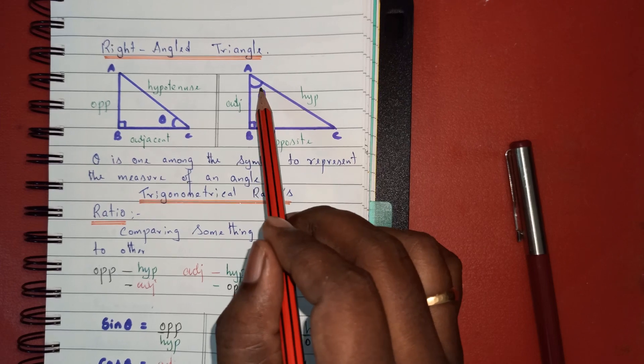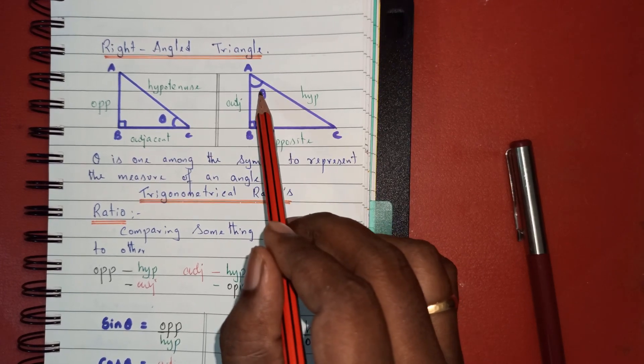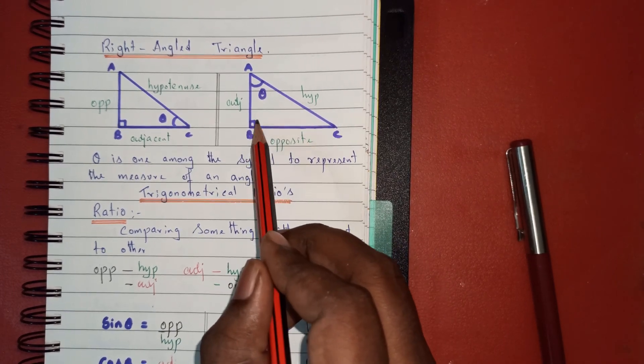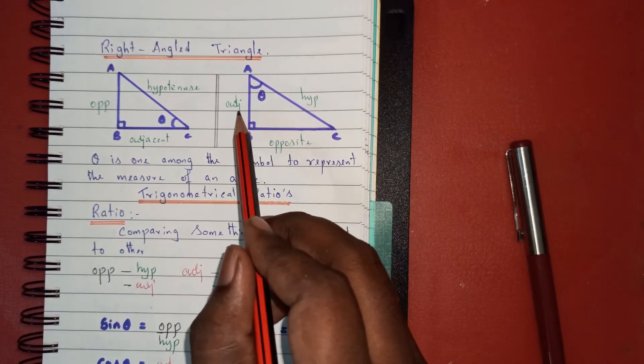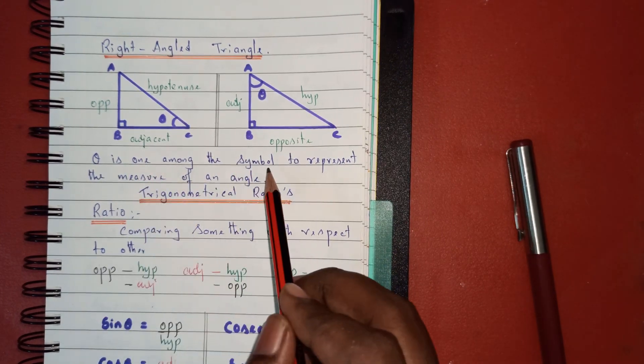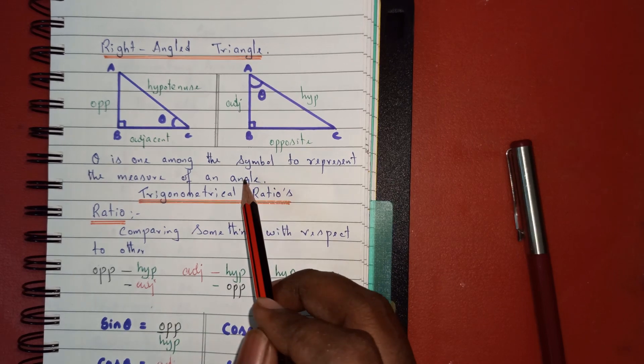If I fix my angle at A, the side opposite to A is called the opposite side. The side opposite to 90 degrees is the hypotenuse. The remaining side is the adjacent side. Theta is a symbol used to represent the measure of an angle. Thank you.